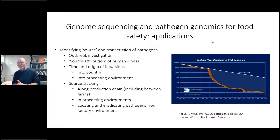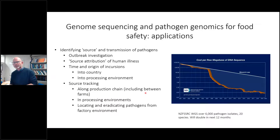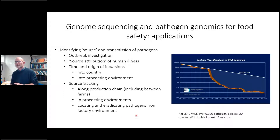The kinds of applications we see include: identifying the source and transmission of foodborne pathogens; outbreak investigations, which are a really obvious and big application; and source attribution — determining the source of sporadic cases. We use this for Campylobacter in New Zealand. You can also, by calibrating the molecular clock using the genome sequence, date the time and origin of incursions into a country and into a processing environment. And within environments, you can look at source tracking along production chains, between-farm transmission, in processing environments, and locating and eradicating resident strains from a food production environment.